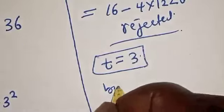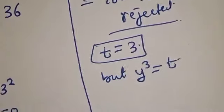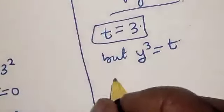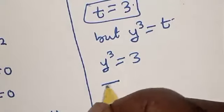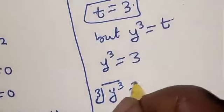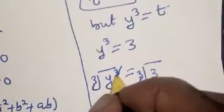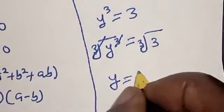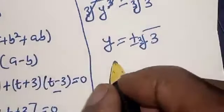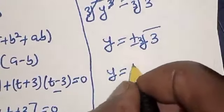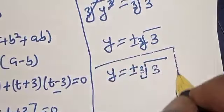But remember that y raised to power 3 is equal to t. So at t equal to 3, we have y raised to power 3 is equal to 3. Let's take the cube root of both sides: cube root of y raised to power 3 equals cube root of 3. So our final answer is y is equal to plus or minus cube root of 3. That is our final answer.